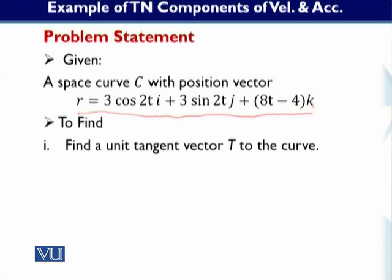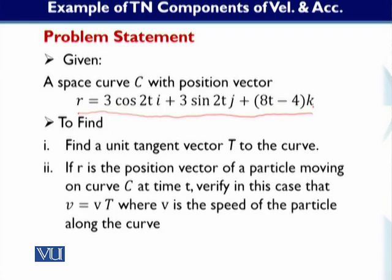We have to find two things. First, find the unit tangent vector T to the curve. Second, if R is the position vector of a particle moving on the curve C at time t, verify that V is equal to v times T — where v (non-italic) is the speed of the particle along the curve, and T is the unit tangent vector.